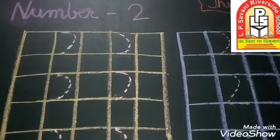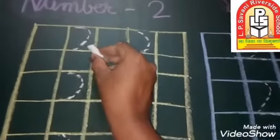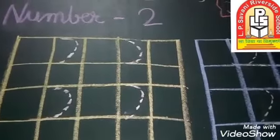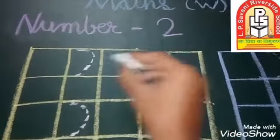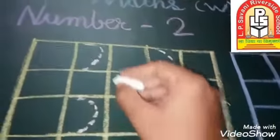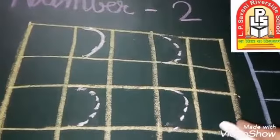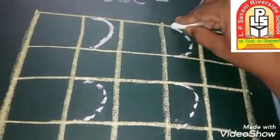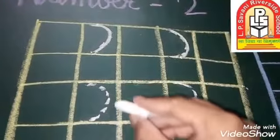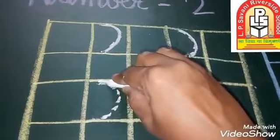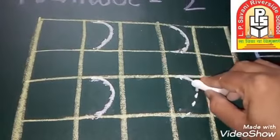First we write a curve. You can see how we write the curve. First we write the tracing. Write with me — curve. This is the curve.